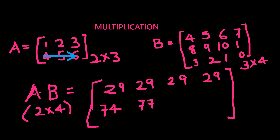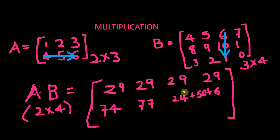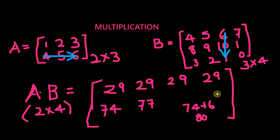Next, we need to multiply 4, 5, 6 with 6, 10, 1 to get the second row, third column. So 4×6 is 24, plus 5×10 is 50, plus 6×1 is 6. That sums up to 74 plus 6 which equals 80. So the second row, third column value is 80.